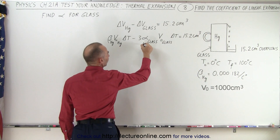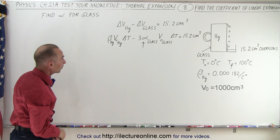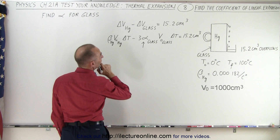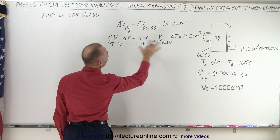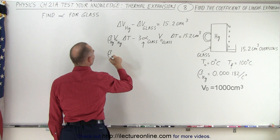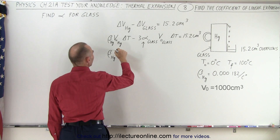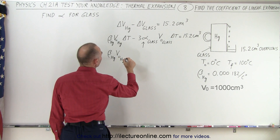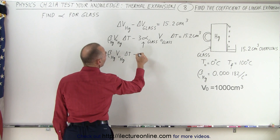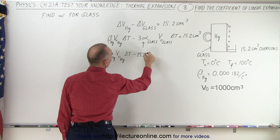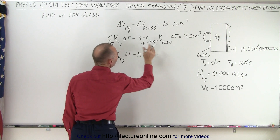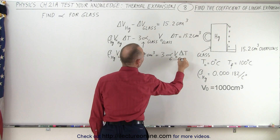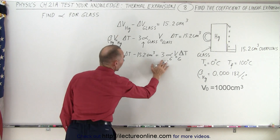The only variable we need to solve for is the linear coefficient of expansion for glass. Let's rearrange the equation. We take the volume coefficient of expansion for mercury times the original volume of mercury times delta T, subtract 15.2 cubic centimeters, and that equals 3 times alpha for glass times the original volume for glass times delta T. Now we are ready to solve for the linear coefficient of expansion.